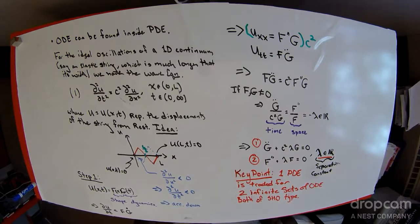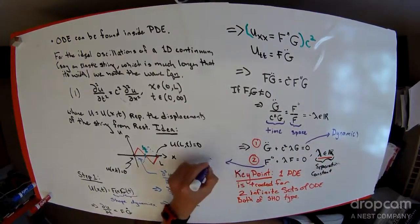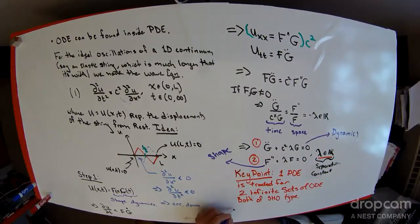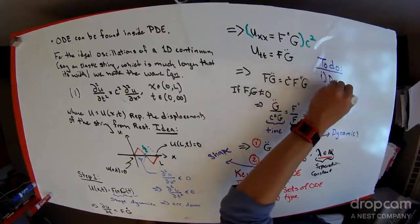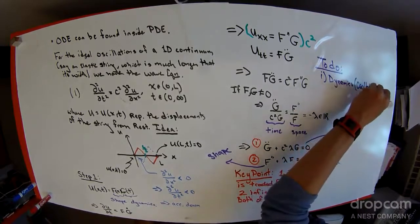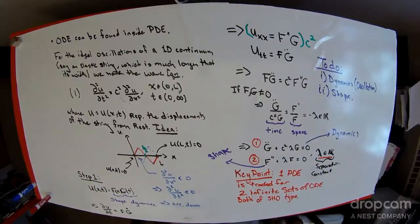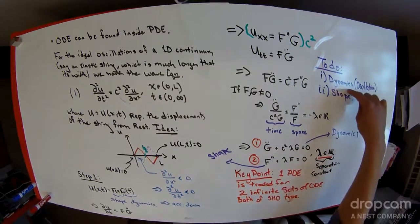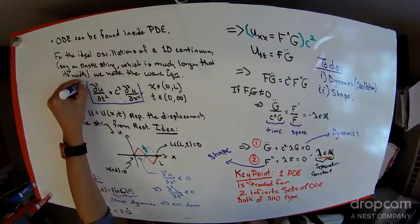Looking back on what we've done, remember this equation is an equation on the dynamics while this equation is on the shape. So the to-do item we have is one, figure out the dynamics, and for the dynamics we demand oscillation. Once we have the dynamics, then we can figure out the shape. That concludes step one. The next step would be step two, which is to solve these equations to figure out the shape and dynamics demanded by this partial differential equation.